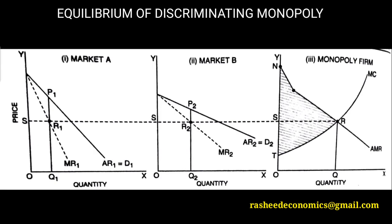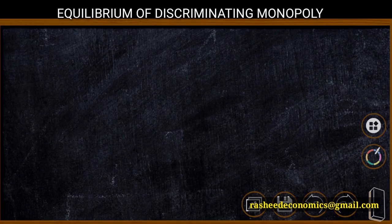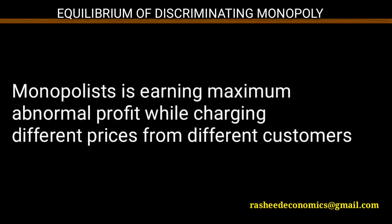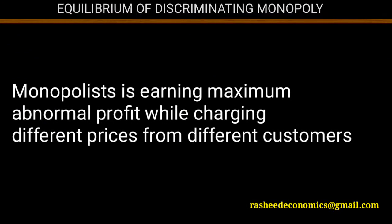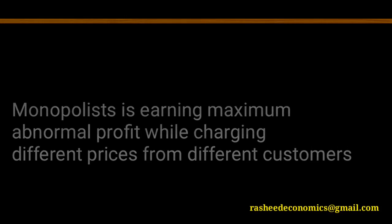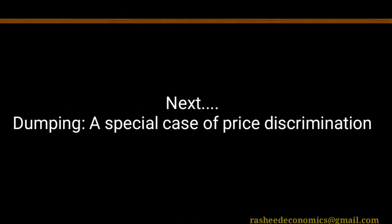According to the policy of a discriminating monopolist, he charges different prices from different markets. He classifies markets on the basis of elasticity of demand — charging higher prices from less elastic demand and lower prices from more elastic demand, and supplying more quantities to more elastic markets and lesser quantities to less elastic markets. By charging different prices from different consumers, the monopolist earns maximum abnormal profit. In the next class, we will be explaining the process of dumping, which is a special case of price discrimination — international price discrimination.